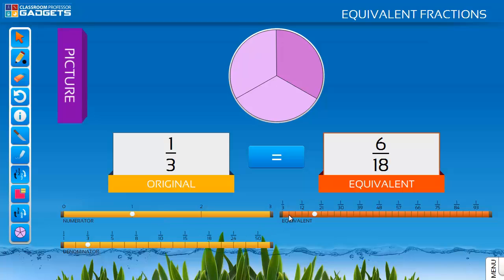It will animate to show that the actual area of the shape has not changed, but just the number and the size of the fractional pieces. Click the equal button and the shape will animate toggling between the two different equivalent fractions.